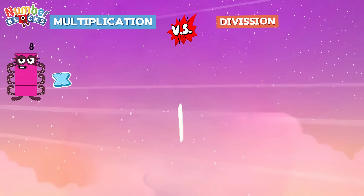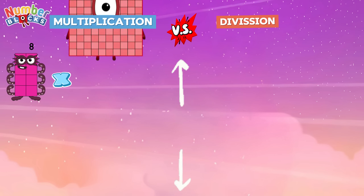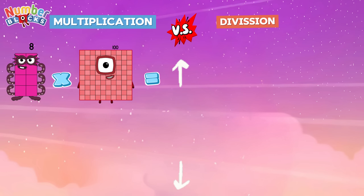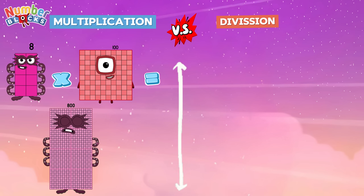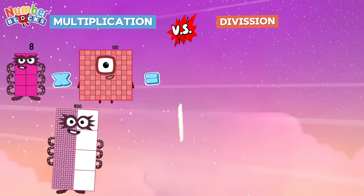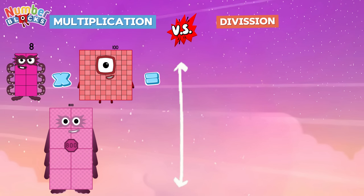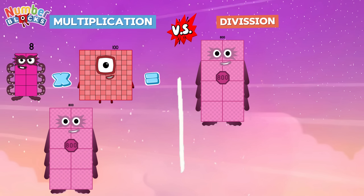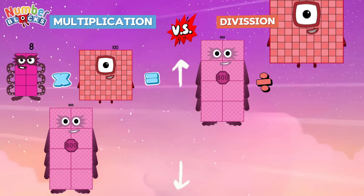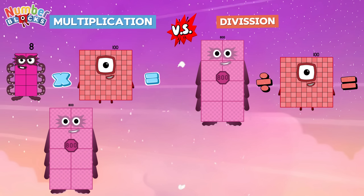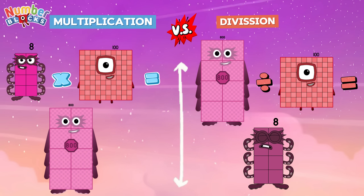Eight multiplied by one hundred is equal to eight hundred. Let's compare it to division: eight hundred divided by one hundred is equal to eight.